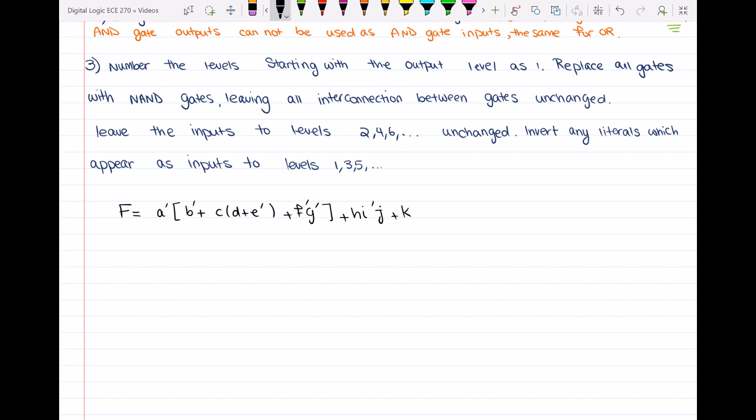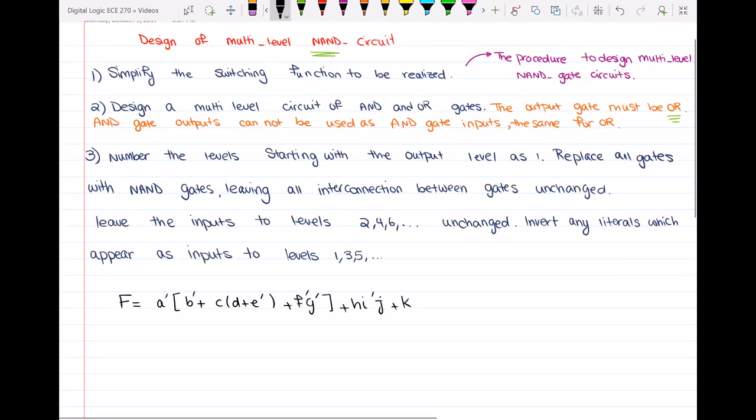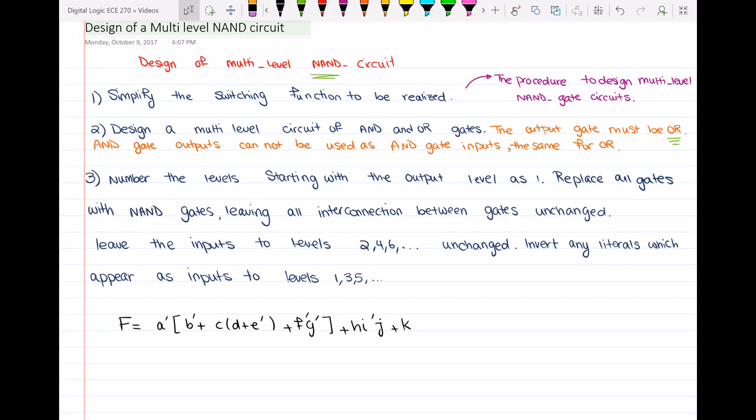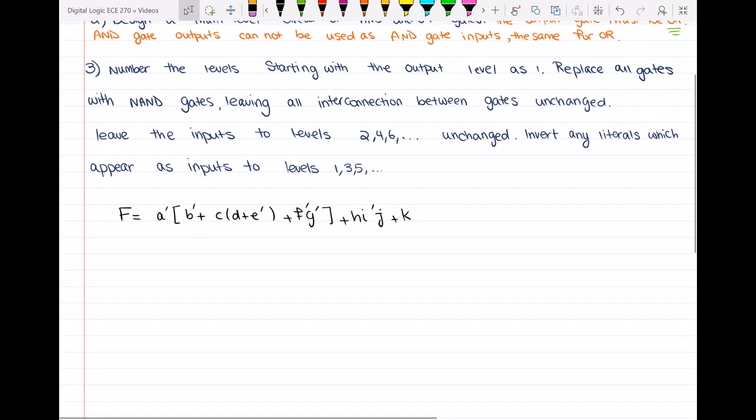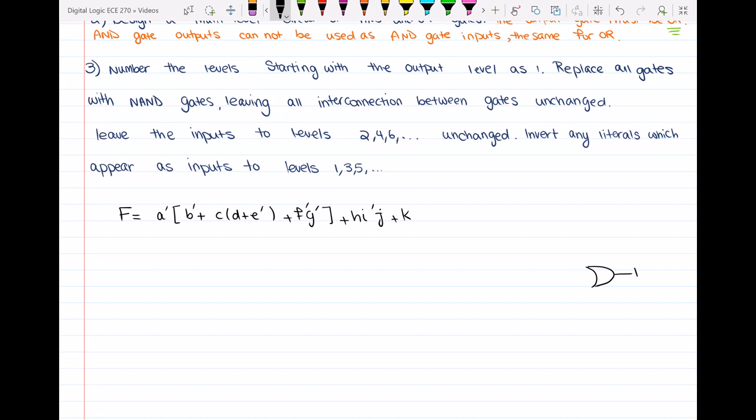So now what I have to do here in step two, I have to design a multi-level circuit of AND and OR gates. And I have to make sure that at the output, I have the OR gate. So what I will do is that since I need the output gate to be an OR, we already know that my output should be an OR gate.